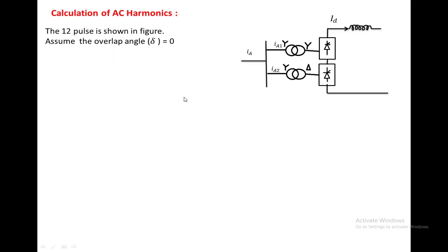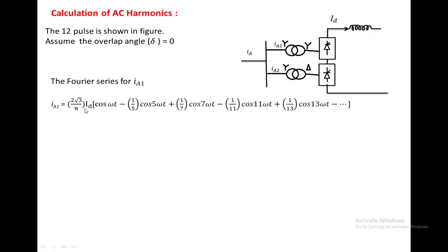Now we look at the calculation of AC harmonics. Two converters are used: one fed by a star-to-star transformer and another fed by a star-to-delta transformer. The second converter takes a current Ia2, and the total current is Ia. The DC link inductor carries current Id, the DC current. Assuming the overlap angle is zero for simplicity, the Fourier series for current Ia1 is: (2√3/π)·Id · [cos ωt − (1/5)cos 5ωt + (1/7)cos 7ωt + ...], where the 5th, 7th, 11th, and 13th harmonics are present.